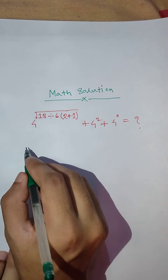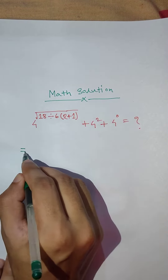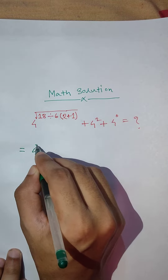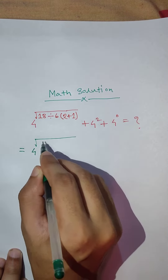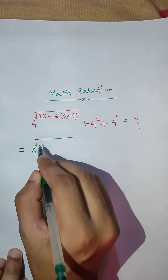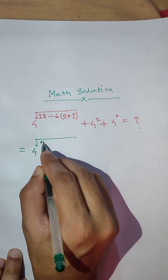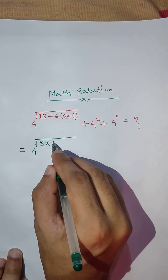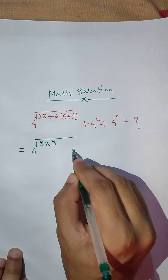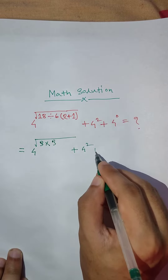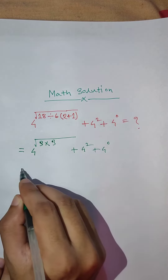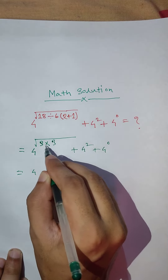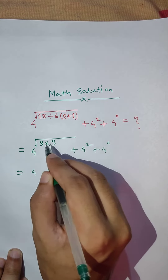So this math is equal to 4. 8 divided by 6 is equal to 3. 3 into 2 plus 1 is equal to 3, plus 4 squared plus 4 is 0, then 4. 9 root 3.